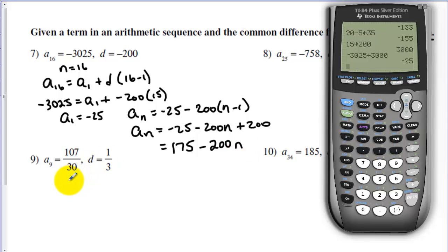Let's look at one here with a fraction. Just makes the math a little messier. And n here is 9, so we get 8 here. We have 107 over 30. This is going to be 8 thirds, so if I get a common denominator that would be 80 thirds. Subtract it to the other side. We've got 27 over 30 is a sub 1, which is, those are both divisible by 3, so we have 9 tenths.